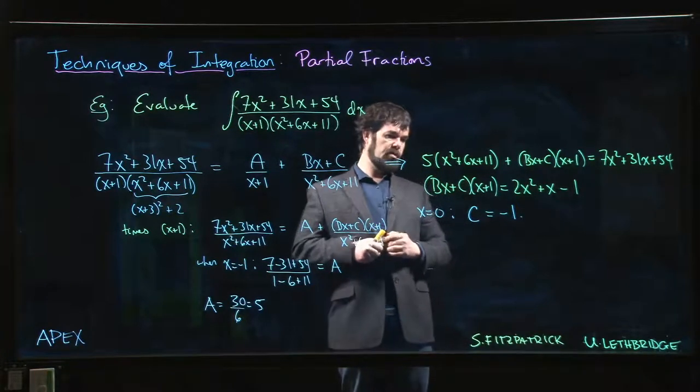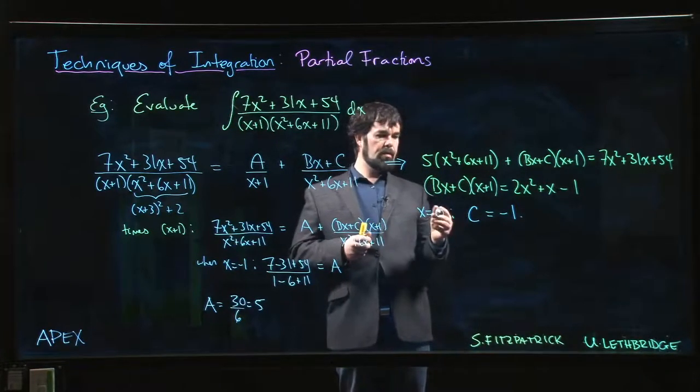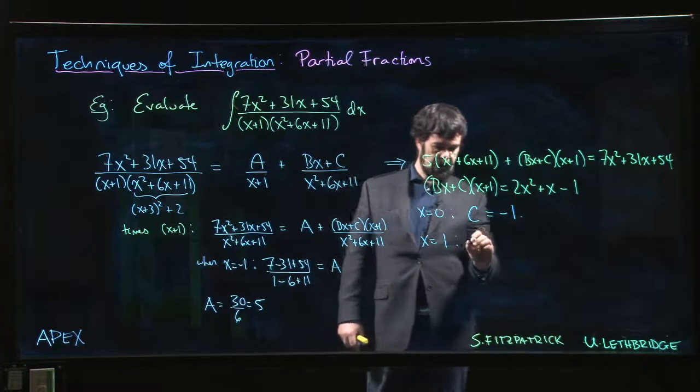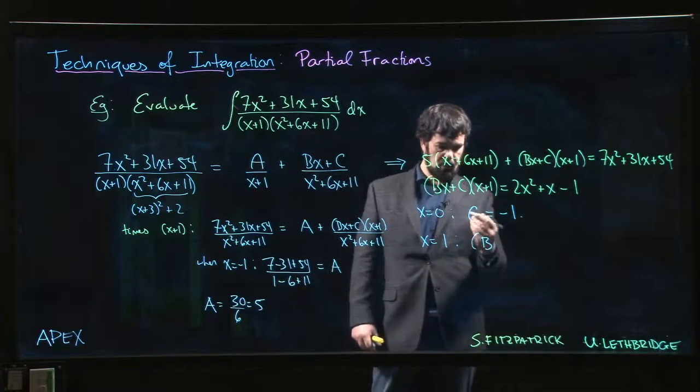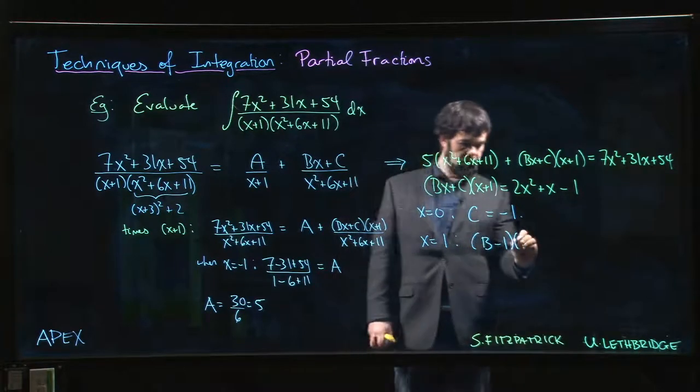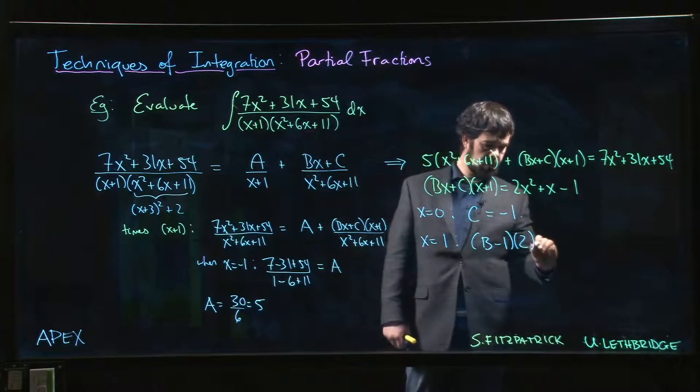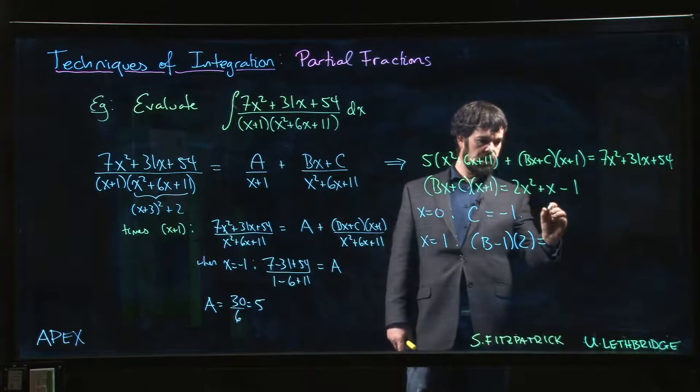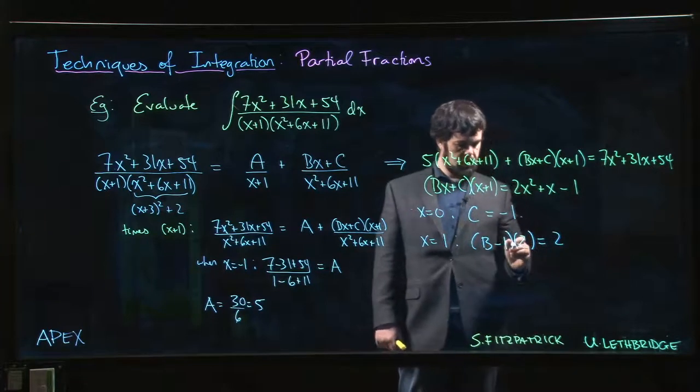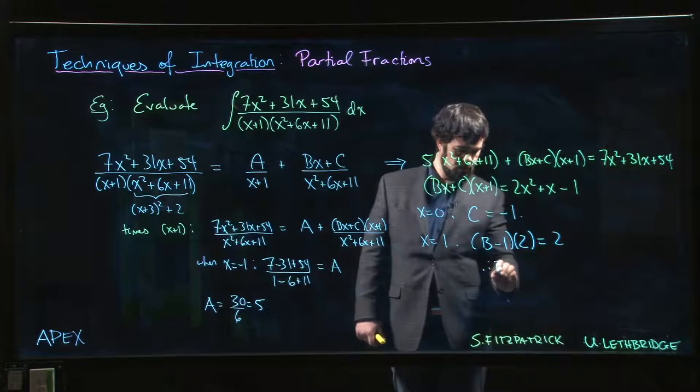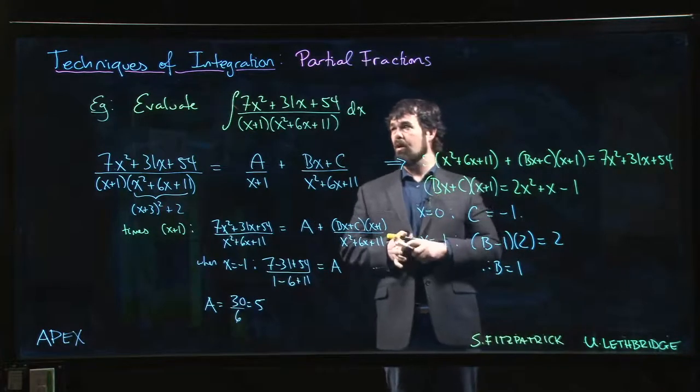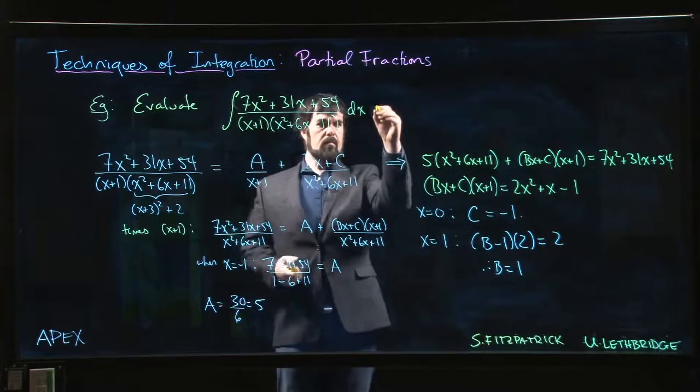So now we want to solve for B. A good value to put in is probably x equals 1. So if I put in x equals 1, I get B times 1, so just B plus C, but C is minus 1. So B minus 1 times 1 plus 1, which is 2, is equal to 2 plus 1 minus 1, which is 2. So the 2s cancel and B has to equal 1. Wasn't so bad after all.